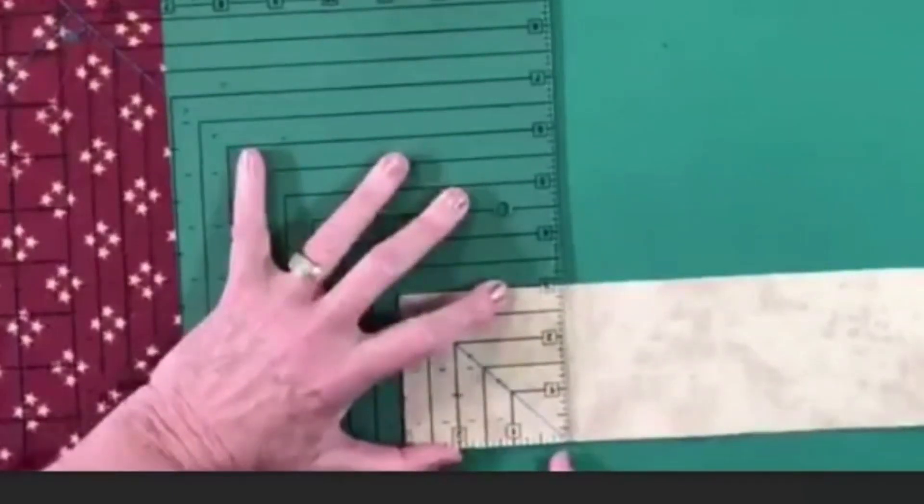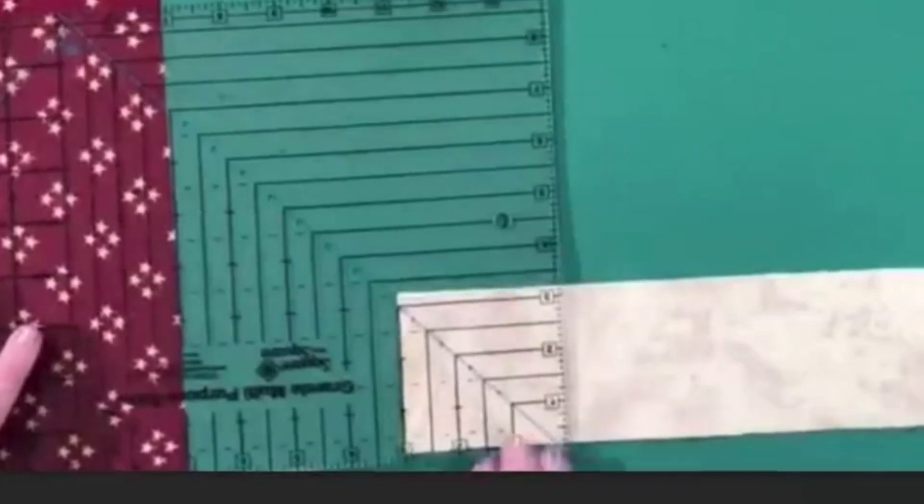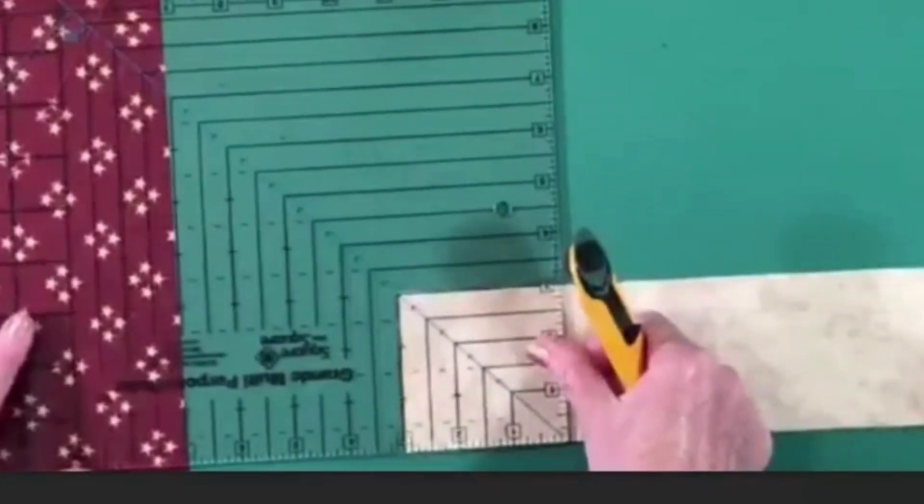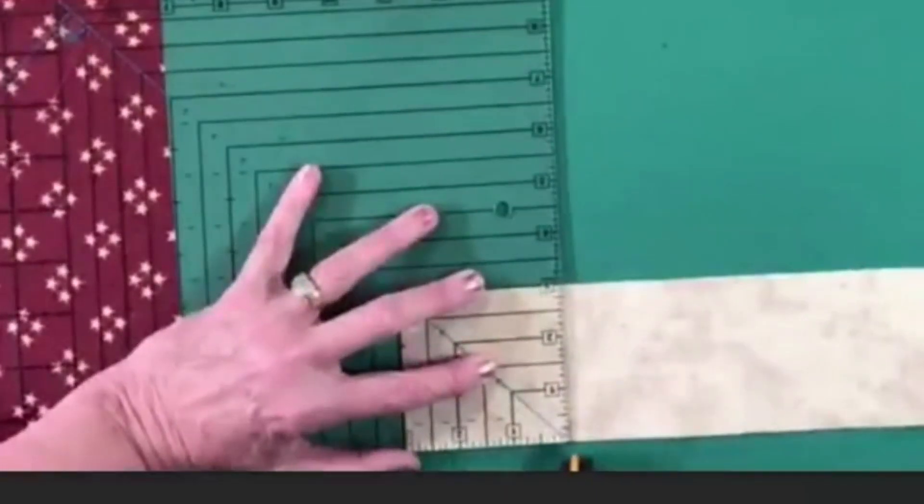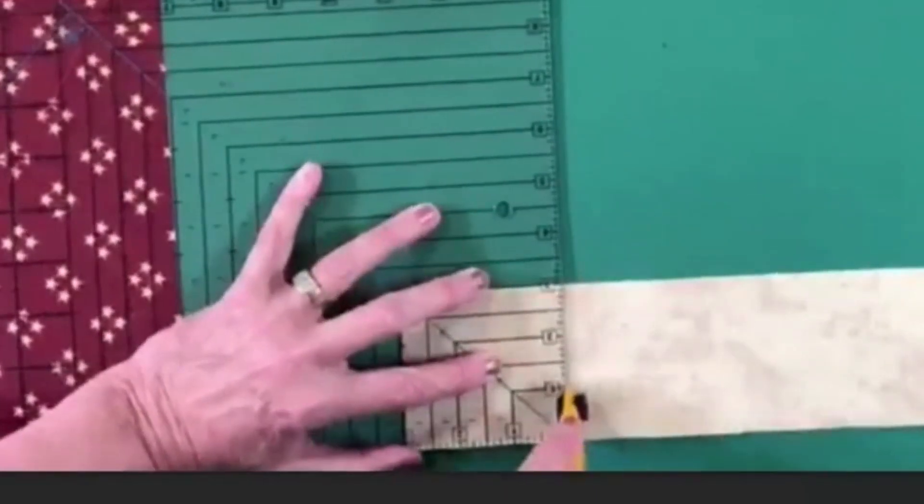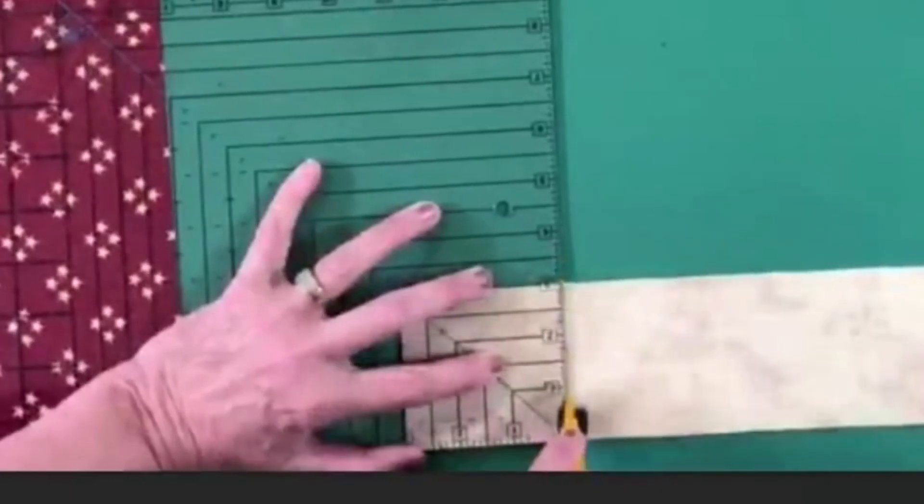Now, since my ruler is not off of the edge of the... see normally I want some ruler hanging off. But in this case, since I'm not, I'm starting in just a little bit. I'm not starting here at the corner. I'm starting in and I'm going out and then I can come back down.